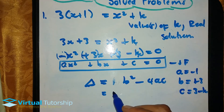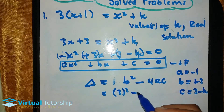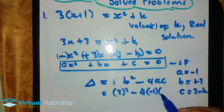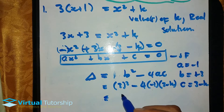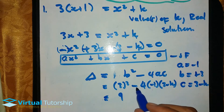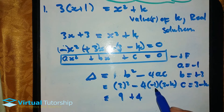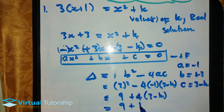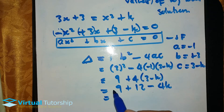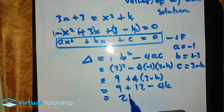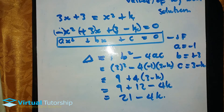So delta equals b squared minus 4ac, which is 3 squared minus 4 times negative 1 times 3 minus k. This equals 9 plus 12 minus 4k. So delta is equal to 21 minus 4k.